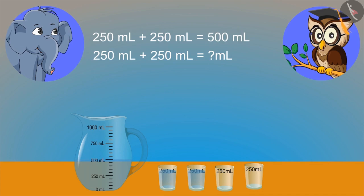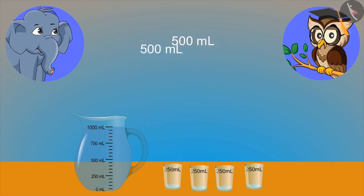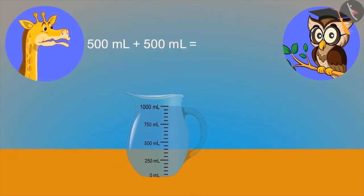If we combine two more glasses of 500 ml water in it, then how much total water will we have? 500 ml and 500 ml means 1000 ml, means 1 liter. Yes, correct.